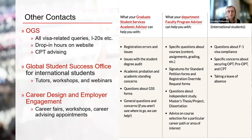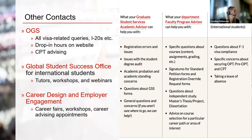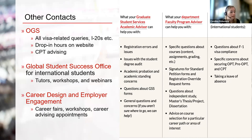This slide is a very small snapshot of the resources available to students at Northeastern. There is an office for most things to support you through your academic journey. If you are an international student, the Office of Global Services also offers academic skills advising and other student engagement opportunities where you can connect with specialists on the international student experience. The career design and employer engagement office is also an extremely valuable resource as you look toward the end of your program and next steps.